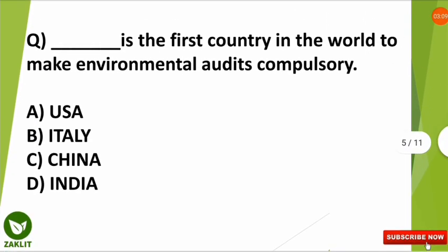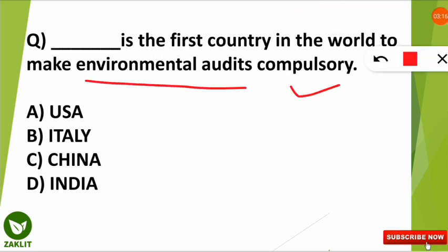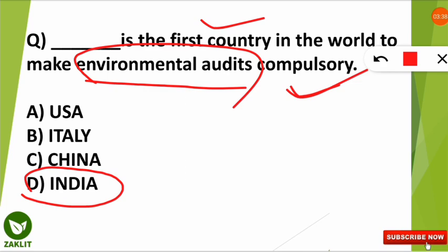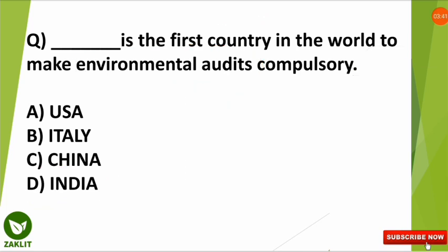The next question is: which is the first country in the world to make environmental audits compulsory? The options are USA, Italy, China and India. The correct option is D — India. We should all be proud that India is the first country in the world to make all environmental audits compulsory throughout the country.